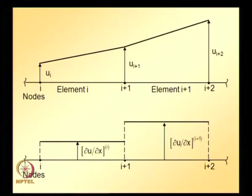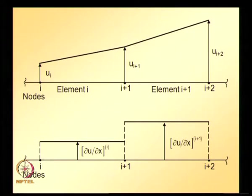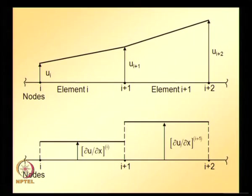The first derivative of the trial solution is also shown. The trial solution is linear and continuous in each element — it is piecewise linear and piecewise continuous — whereas the first derivative of the trial solution is discontinuous across element boundaries and is constant within each element.